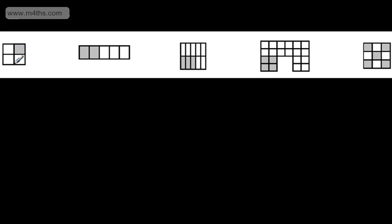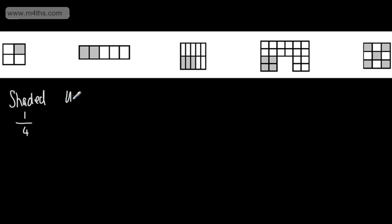If we look at this square here, we can see it's split into four smaller squares. I can see that I have one of the four squares shaded and three unshaded. So if I wanted to write these as fractions, we'll start with the shaded: we've got one quarter, and the unshaded, we can see that we have three quarters.